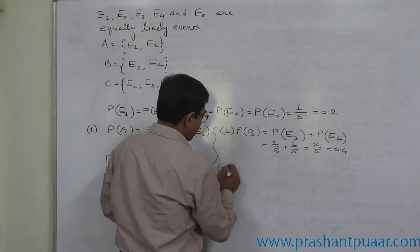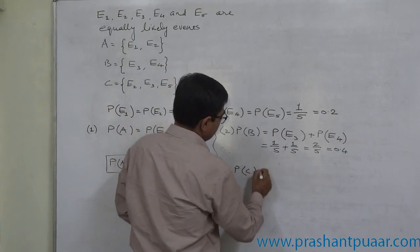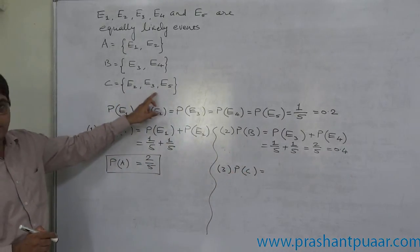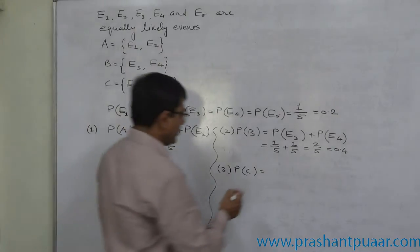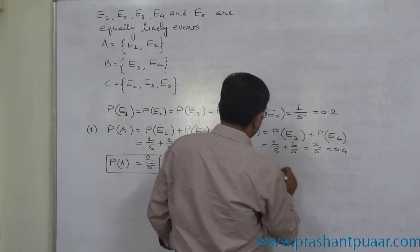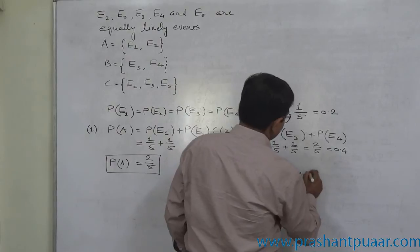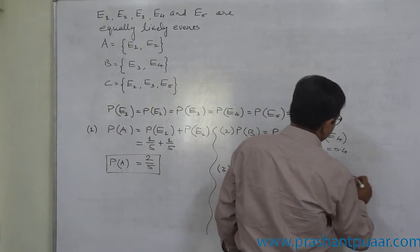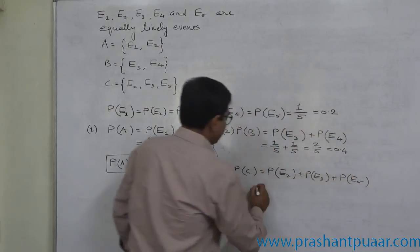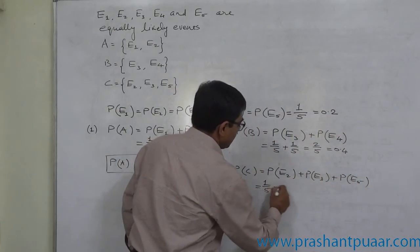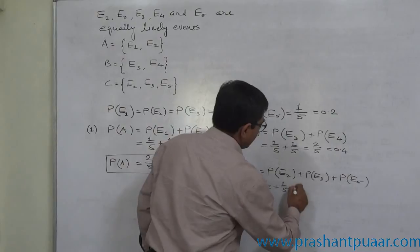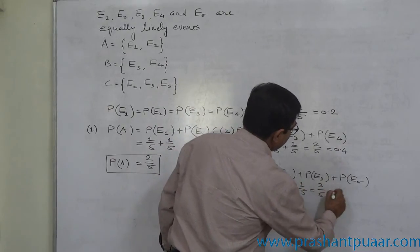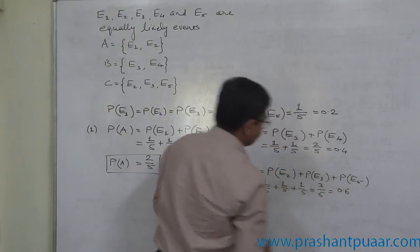So P of C is P of E2 plus P of E3 plus P of E5. That means 1 by 5 plus 1 by 5 plus 1 by 5, that is 3 by 5, or 0.6.